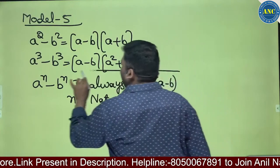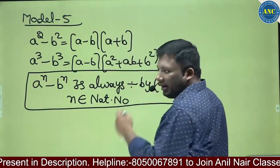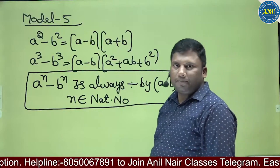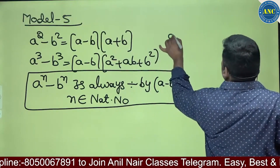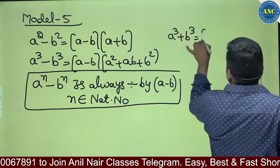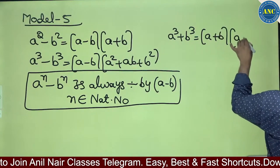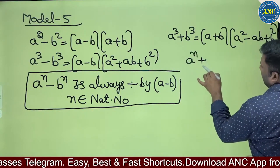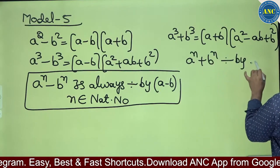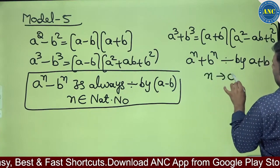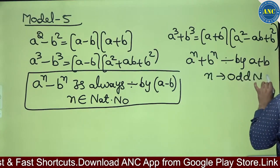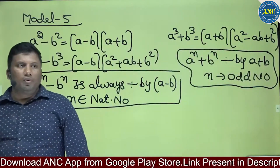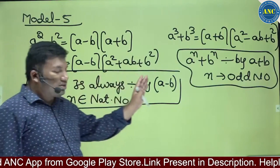A power N minus B power N is divisible by A minus B when N is a natural number. Similarly, A power N plus B power N is divisible by A plus B when N is an odd number. A power N plus B power N is always divisible by A plus B when N is an odd number. These are the two concepts for Model 5.